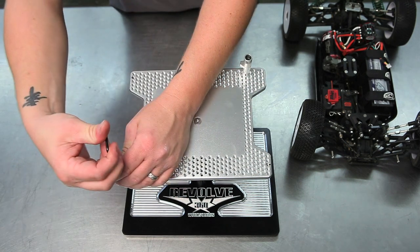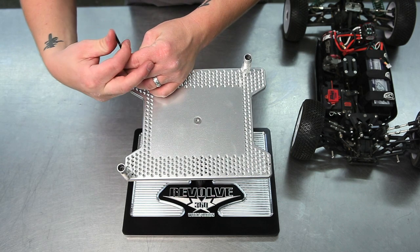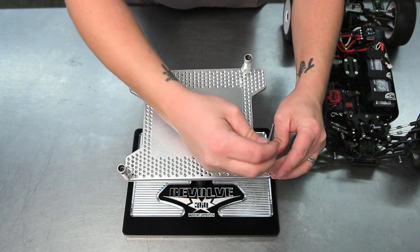With this Losi buggy, we'll use two tall locking tabs. Now we'll place our two locating tabs, ensuring the car will not move when placed on the workstation.